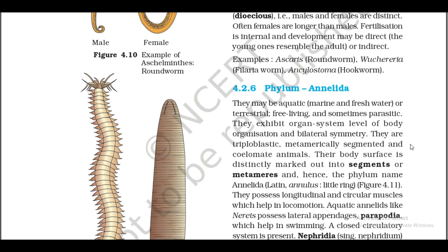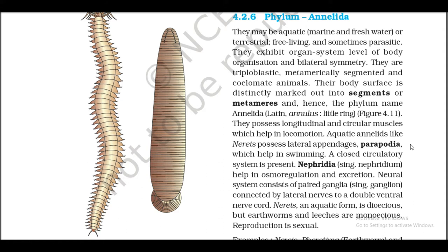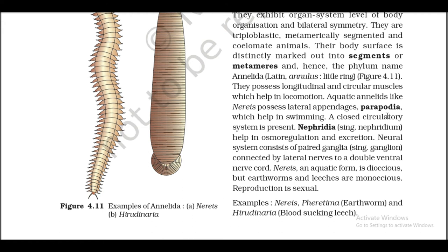4.2.6 Phylum Annelida. They may be aquatic — marine and freshwater — or terrestrial, free-living, and sometimes parasitic. They exhibit organ system level of body organization and bilateral symmetry. They are triploblastic, metamerically segmented, and coelomate animals. Their body surface is distinctly marked out into segments or metamers, hence the phylum name Annelida (Latin: annulus, little ring) (Figure 4.11). They possess longitudinal and circular muscles which help in locomotion.